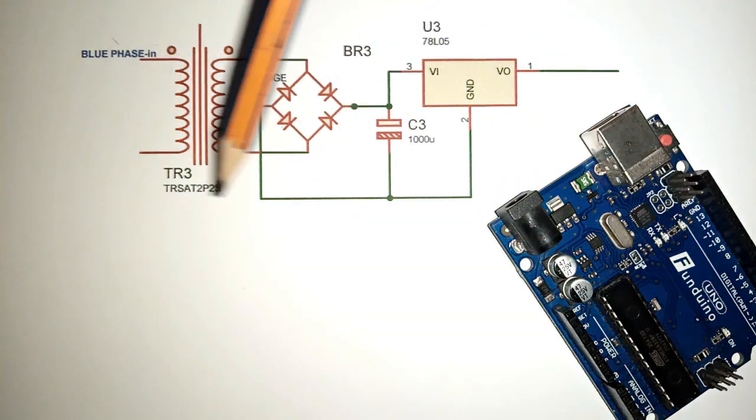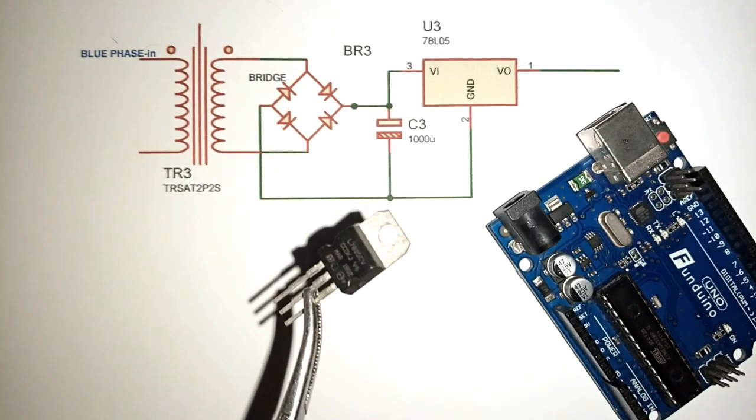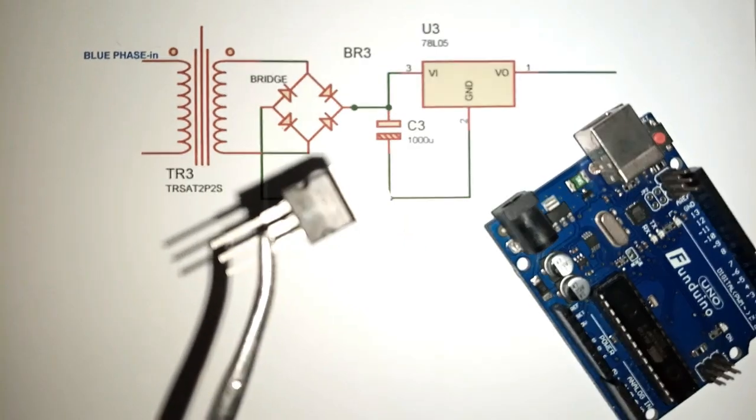The output of the three AC to DC converters is fed to the Arduino through the five voltage regulator IC, which in our case is the 7805 chip.